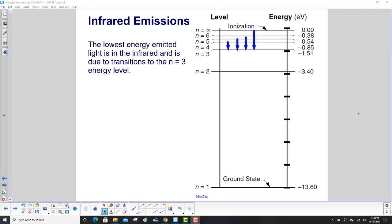And finally, the lowest energy emitted light is in the infrared. And that is due to transitions to the n equal 3 level. So here's 4 to 3, 5 to 3, etc. And you can see how those are smaller energies. The arrows are smaller.